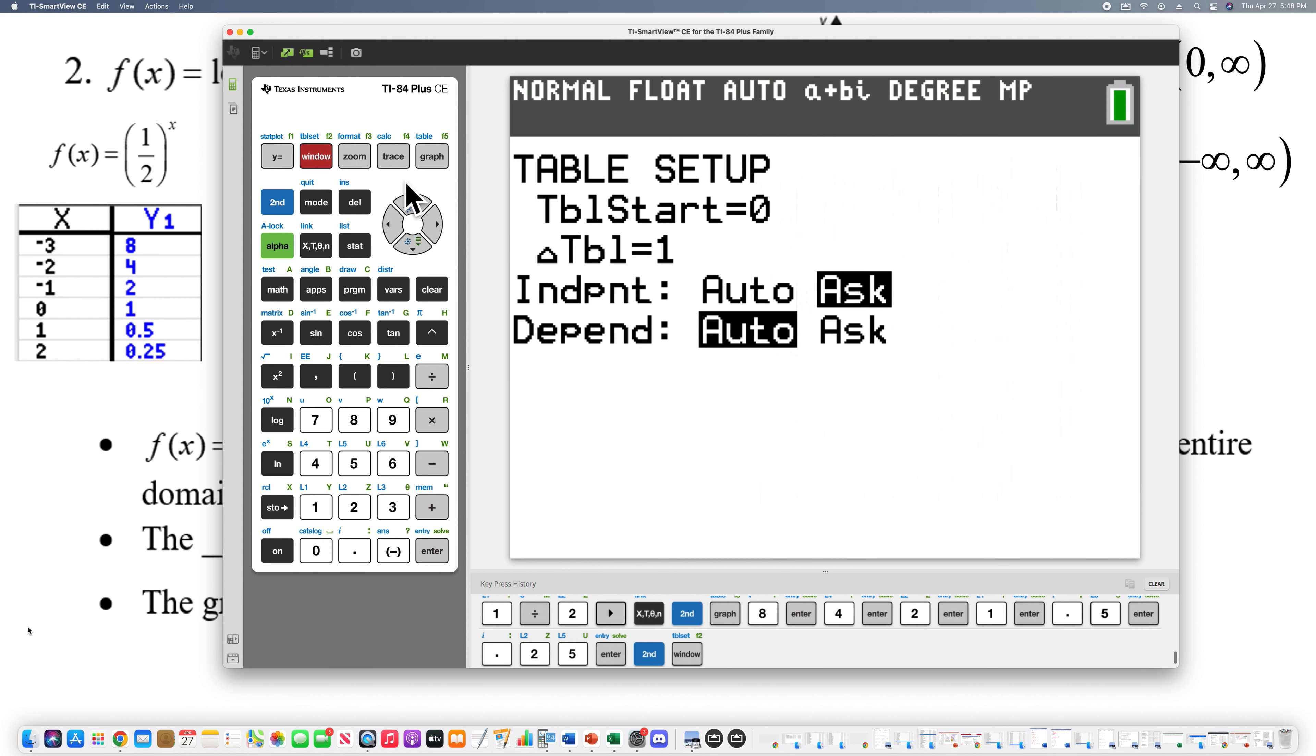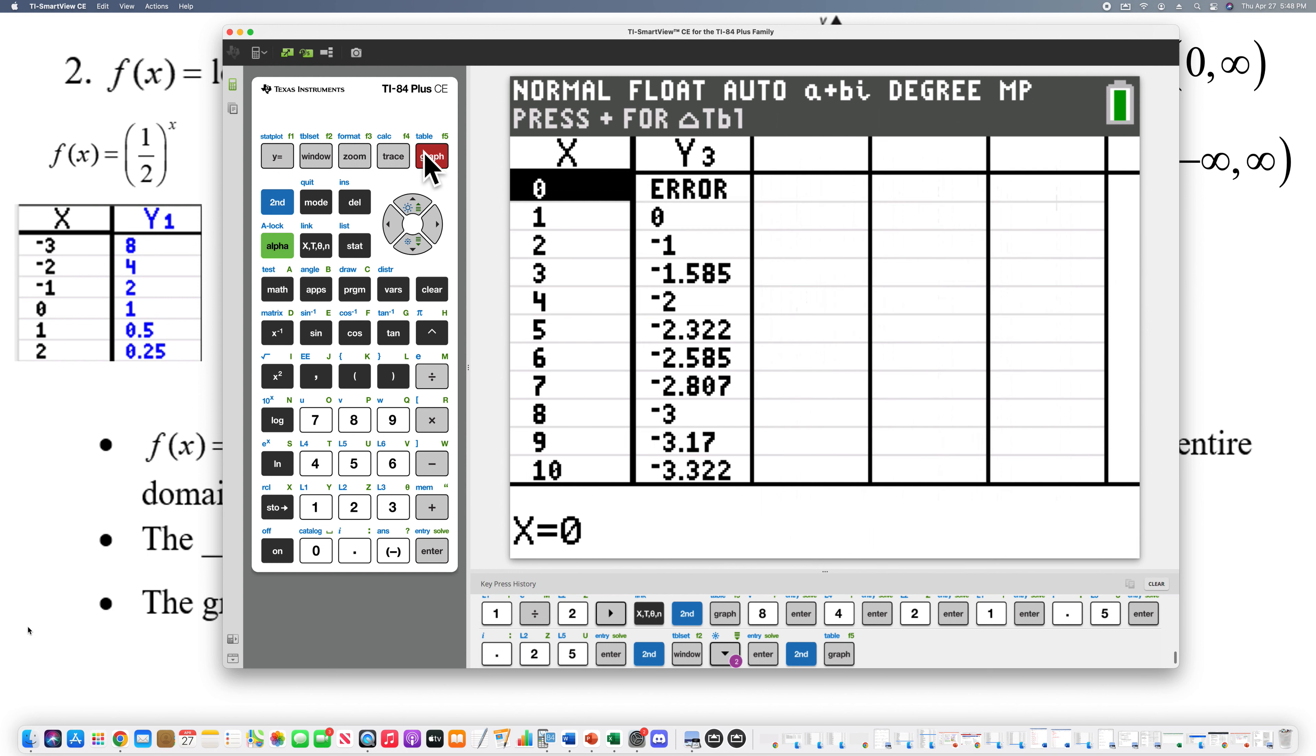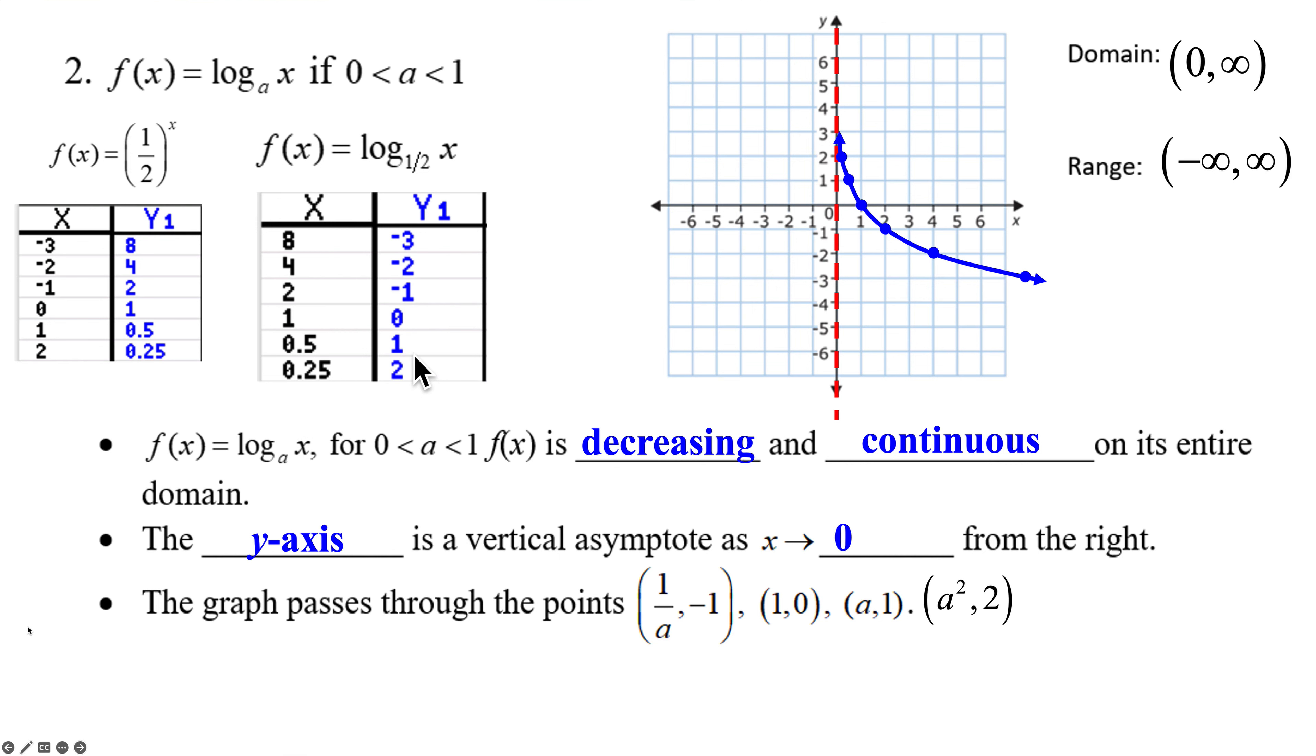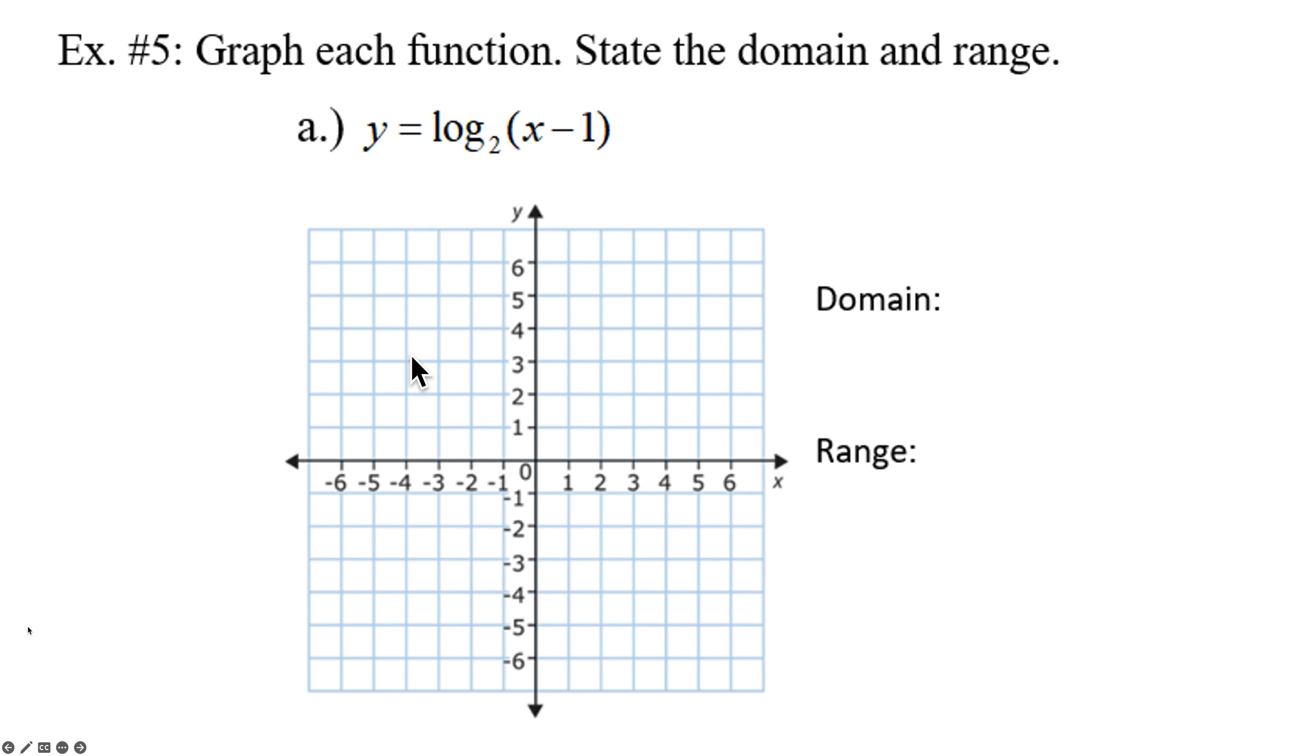Now, if I have the table counting, you can see now I change it to auto. It's counting by ones. Now you're going to get some really crazy, ugly possible decimal answers. You'll just have to scroll through and find the nice points to plot. If you want to go further. Let me put that away. We'll come back to that later.